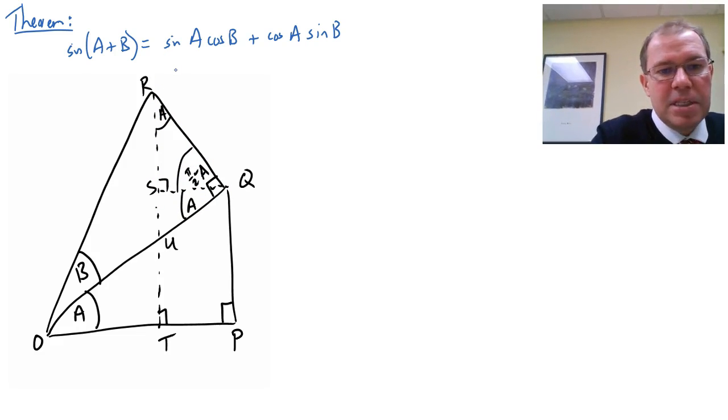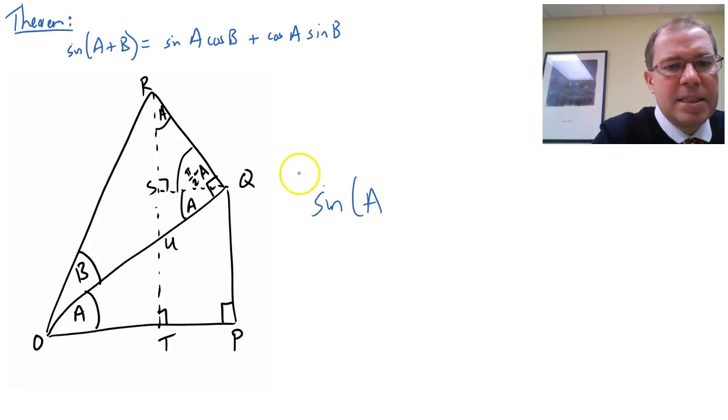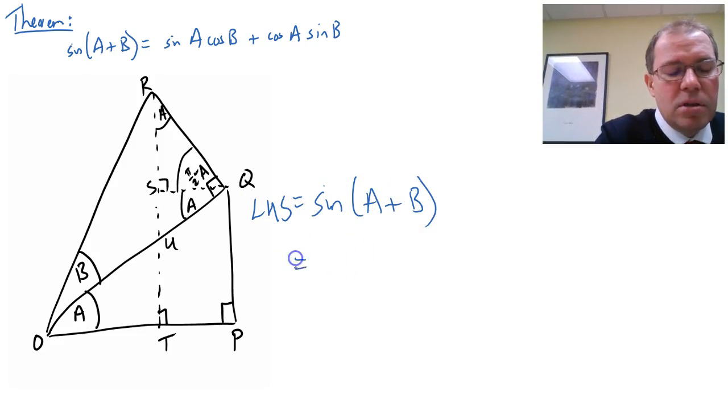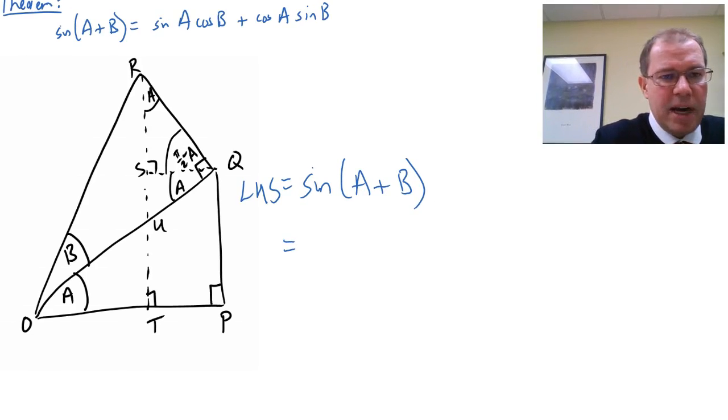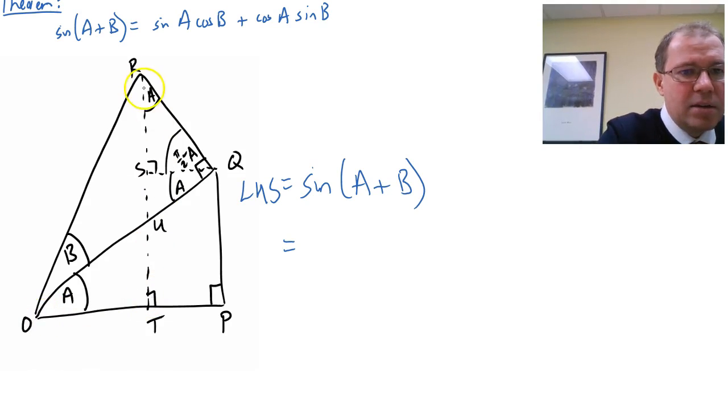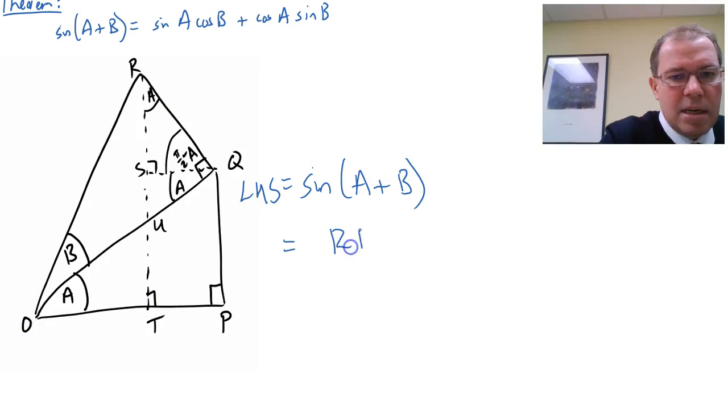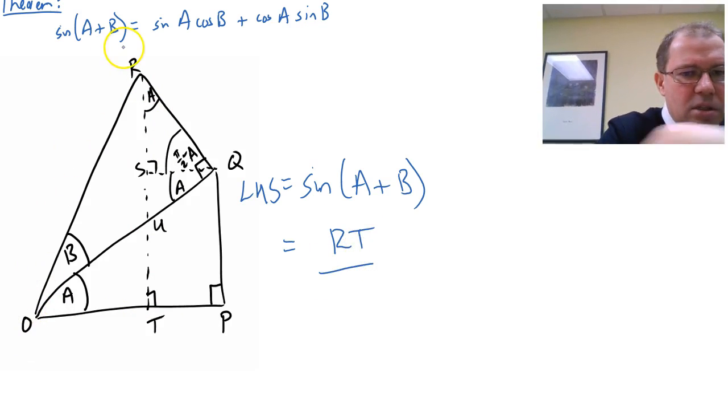So let's start off with sin(A+B). I'm going to start with the left-hand side. So left-hand side equals sin(A+B), and I'm going to do some mathematics on it and get to the right-hand side. So firstly, sin(A+B) is opposite over hypotenuse, so I'm looking in this triangle here, and I can see the opposite is RT and my hypotenuse is OR, looking at this right-angled triangle here.